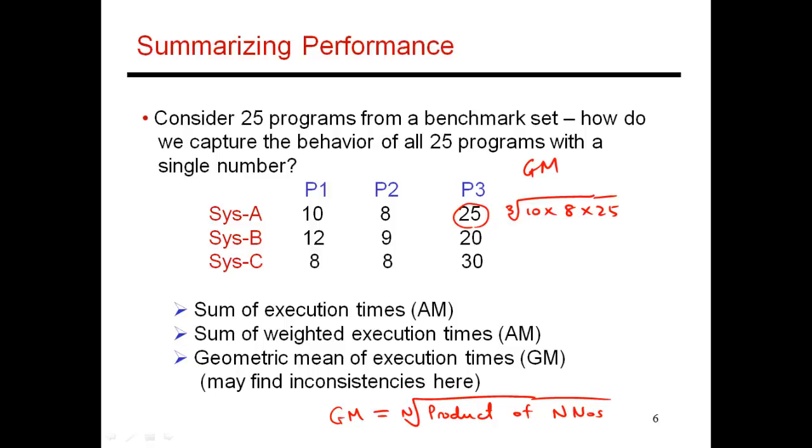For example, let's say that I introduce something that worsens execution time by a factor of 1.2. If that happens here, the new GM would be cube root of 10 times 1.2 times 8 times 25. If I instead worsen the execution time of program P3, in that case the new GM would be 10 times 8 times 25 times 1.2. So hurting the execution of programs by a factor of 1.2 impacts GM in exactly the same way, regardless of which program that de-optimization was being applied to.